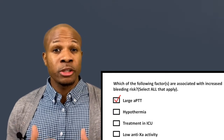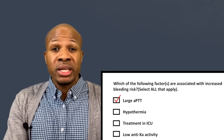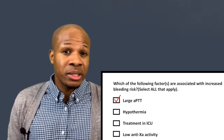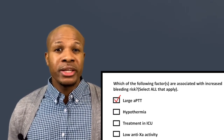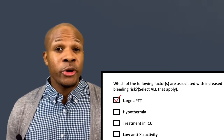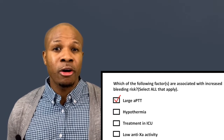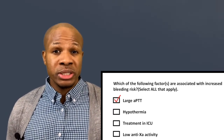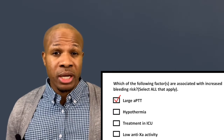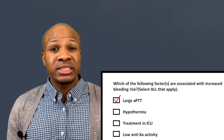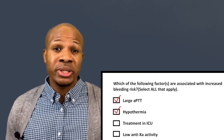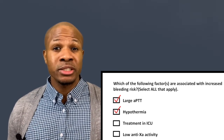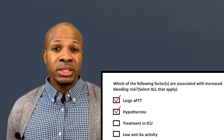However, hypothermia has a very negative impact on clotting factors. This negative impact reduces the ability of clotting factors to come together and form a blood clot. So instead of lowering bleeding risk, hypothermia actually increases it. Answer choice C says treatment in the ICU.